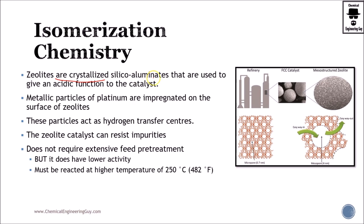Zeolites, on the other hand, are crystallized silico-aluminates that are used to give an acidic function as a catalyst. Remember before we have seen a lot of hydrogen sulfide or sulfuric acid, phosphoric acid interaction, even hydrofluoric acid. Those are providing a proton, which is the acidic catalyst. Metallic particles of platinum are impregnated on the surface of zeolites. These particles act as hydrogen transfer centers. Remember these hydrogens. The zeolite catalyst can resist impurities, so that's an advantage compared to the chlorinated catalyst. Does not require extensive feed pretreatment, which is awesome, and thus that means that our catalyst is going to last longer. But as stated before, has lower activity, will require high temperatures, and it's one for the other.